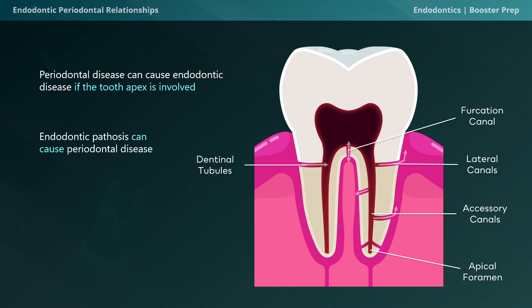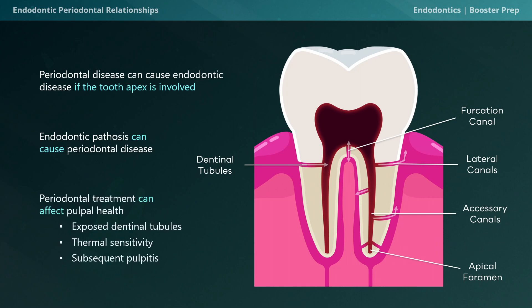Second, endodontic pathosis can cause periodontal disease. This is a little more common because, unlike the relatively slow-moving periodontal lesions in bone, bacteria once they're in the pulp can travel to the apex rather quickly and begin to cause periodontal issues. Lastly, periodontal treatments such as routine scaling and root planing can affect pulpal health by exposing dental tubules to fluid and bacterial penetration, causing thermal sensitivity and subsequent pulpitis. It's common for patients to report heightened sensitivity after SRP.